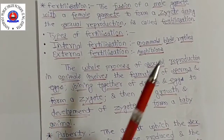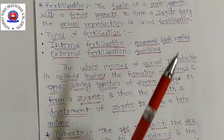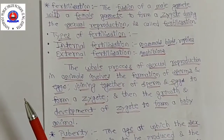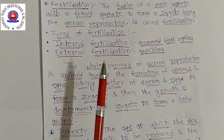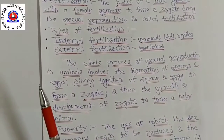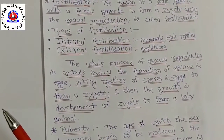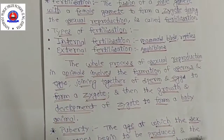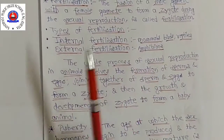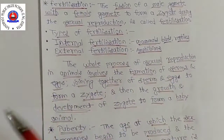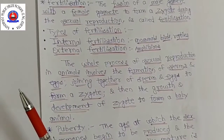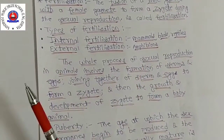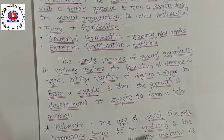Sexual reproduction has many advantages over asexual reproduction. In asexual reproduction, the offspring are almost identical to their parent because they have the same genes. Much genetic variation is not possible in asexual reproduction, which inhibits further evolution. In sexual reproduction, the offspring are similar to their parents but not identical, because offspring receive some genes from the mother and some from the father, resulting in mixing of genes in various combinations, giving all offspring genetic variation.